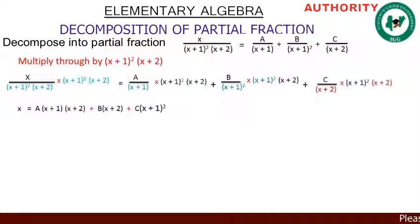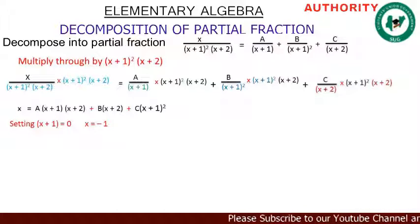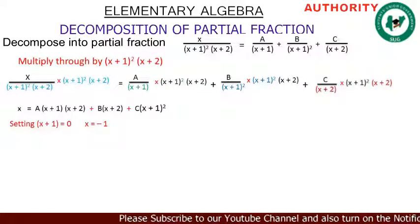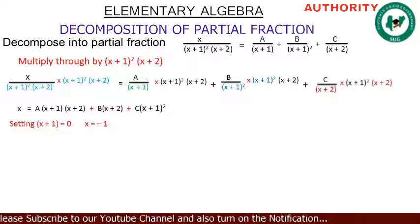So therefore we are left with: x = A(x+1)(x+2) + B(x+2) + C(x+1)². Now in our factors, let's set one of them equal to zero. Setting x+1 = 0 gives x = -1.